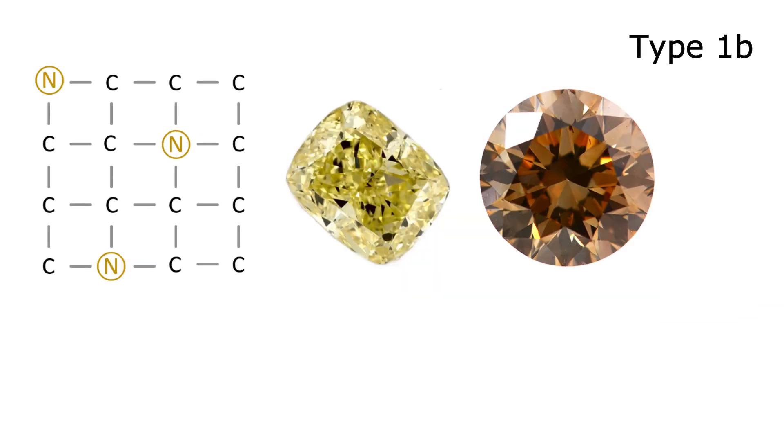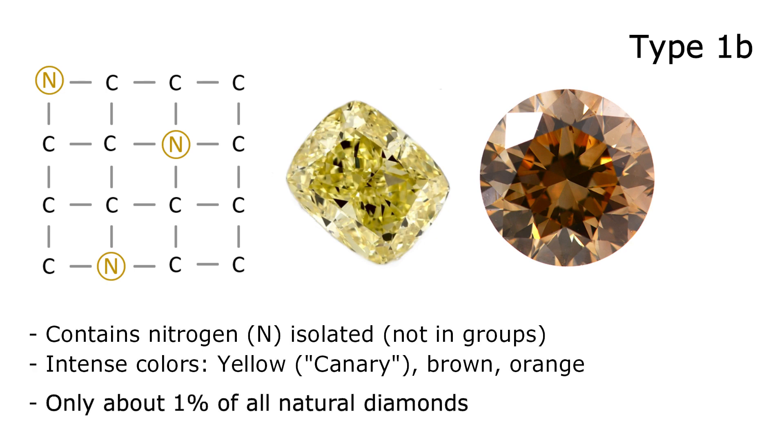Type 1b contains nitrogen isolated, single atoms in the atomic layer. They come in intense colors like the famous yellow canary, brown or orange. Only about 1% of all natural diamonds.